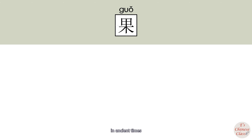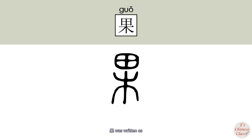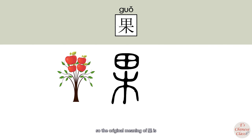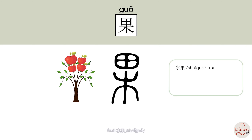In ancient times, 果 was written differently. The lower part refers to a tree, and the upper part refers to fruit on the tree. So the original meaning of 果 is fruit (水果). The extended meaning is result (结果).